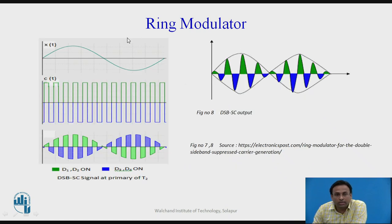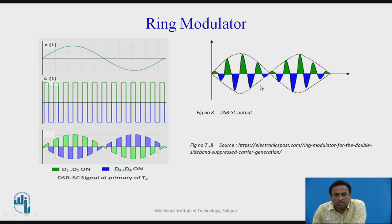Looking at the graph: X(t) is the modulating signal and C(t) is the carrier signal. When D1 and D2 are on, the output is produced, and there is a phase reversal due to the polarity change when switching from D1/D2 to D3/D4. This output is the DSBSC signal where the carrier has been suppressed. The advantage is that more power is saved and efficiency increases.